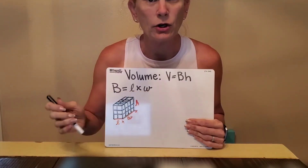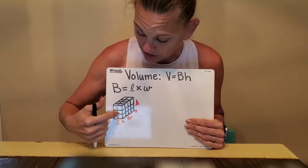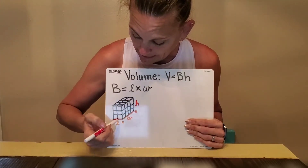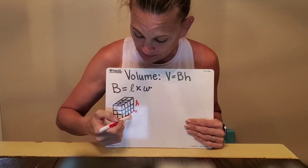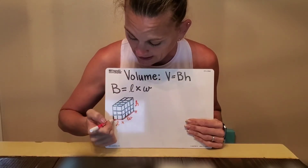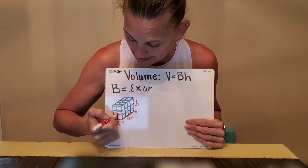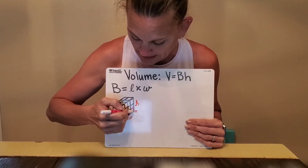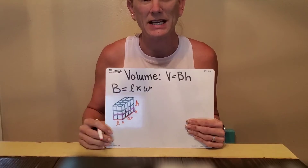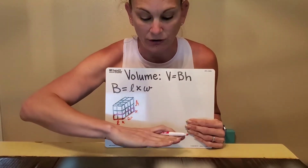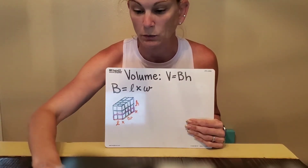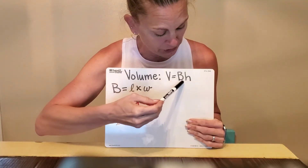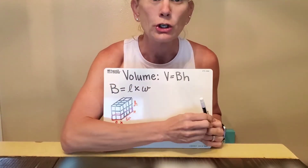...length times width, or what we know as area. On this one right here I drew it out, and I want you to see length times width and then there's the times height. The base — sorry, doing this upside down is not the easiest — that is the base piece. It is like the first layer; that is what we call the base.